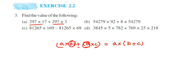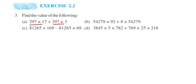You take the common number out of the bracket, first do the addition of the two remaining numbers, and then multiply with the common number. This applies to both addition and subtraction.